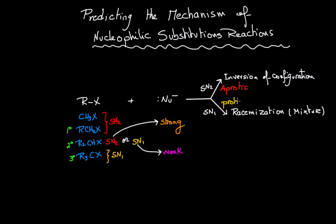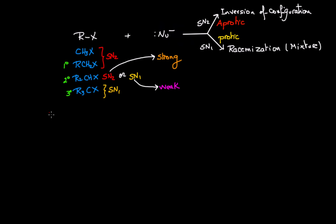The SN2 mechanism favors aprotic solvents, while the SN1 mechanism favors protic solvents. SN2 favors aprotic solvents because the nucleophile is less solvated and therefore its strength is not affected. SN1 favors protic solvents because they weaken the nucleophile through hydrogen bonding.